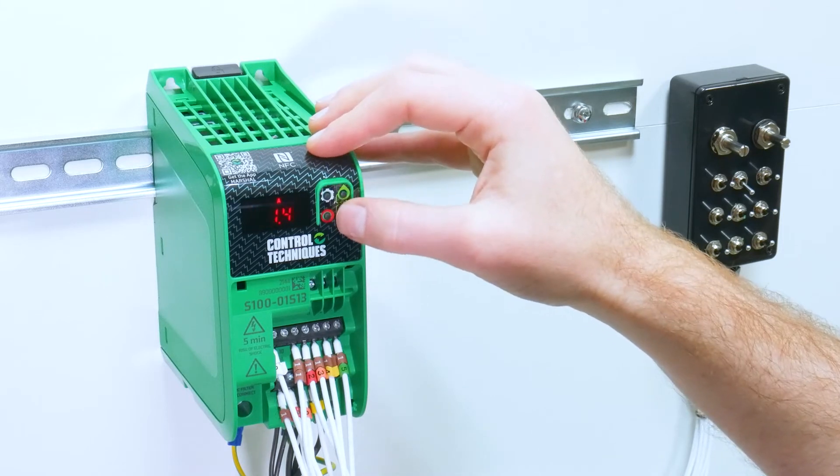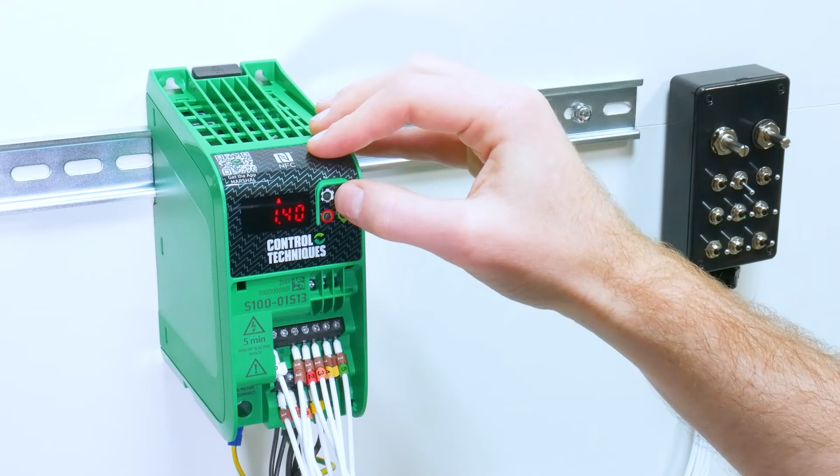Parameter 6 is our motor rated current. For me this is 0.7 amps.